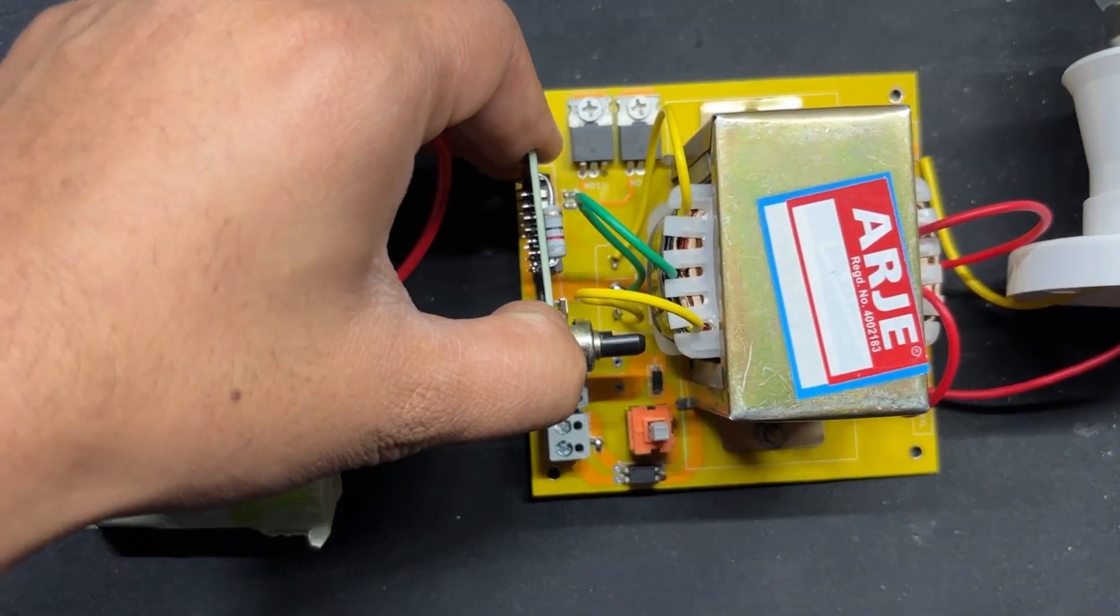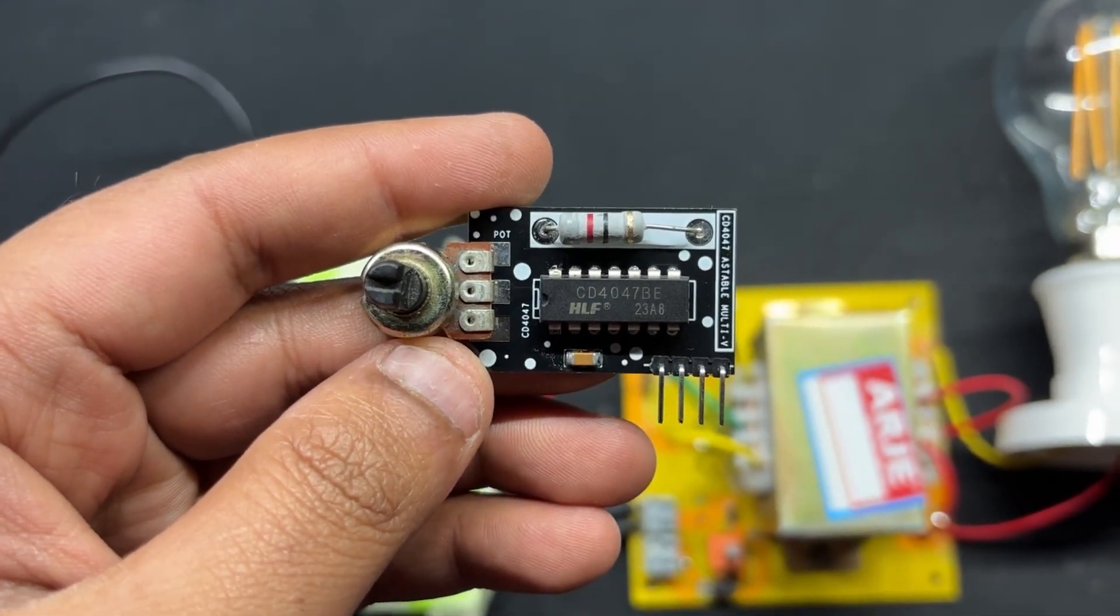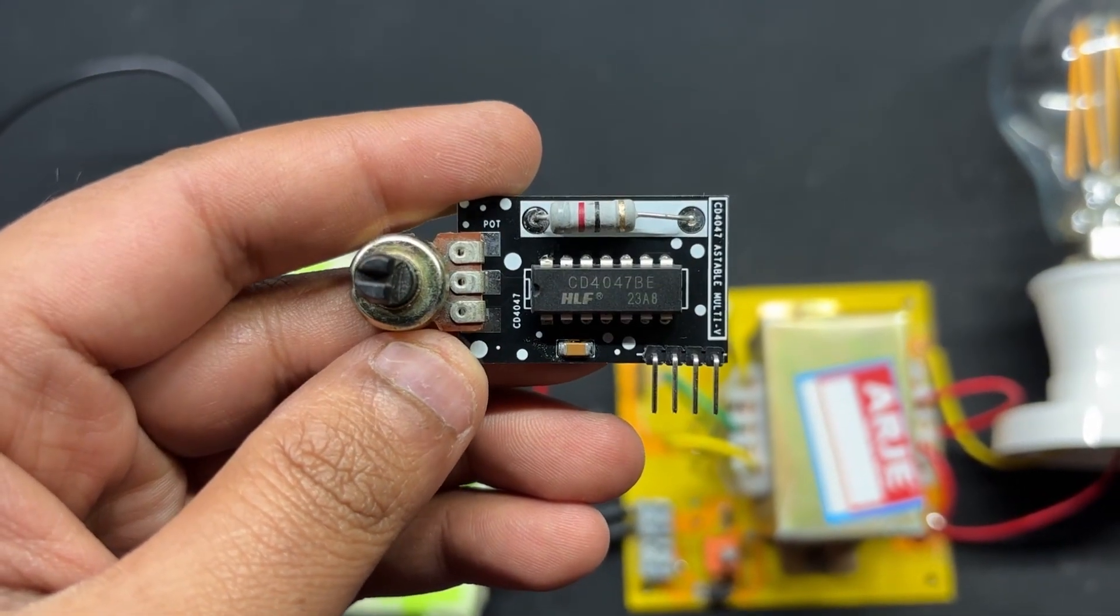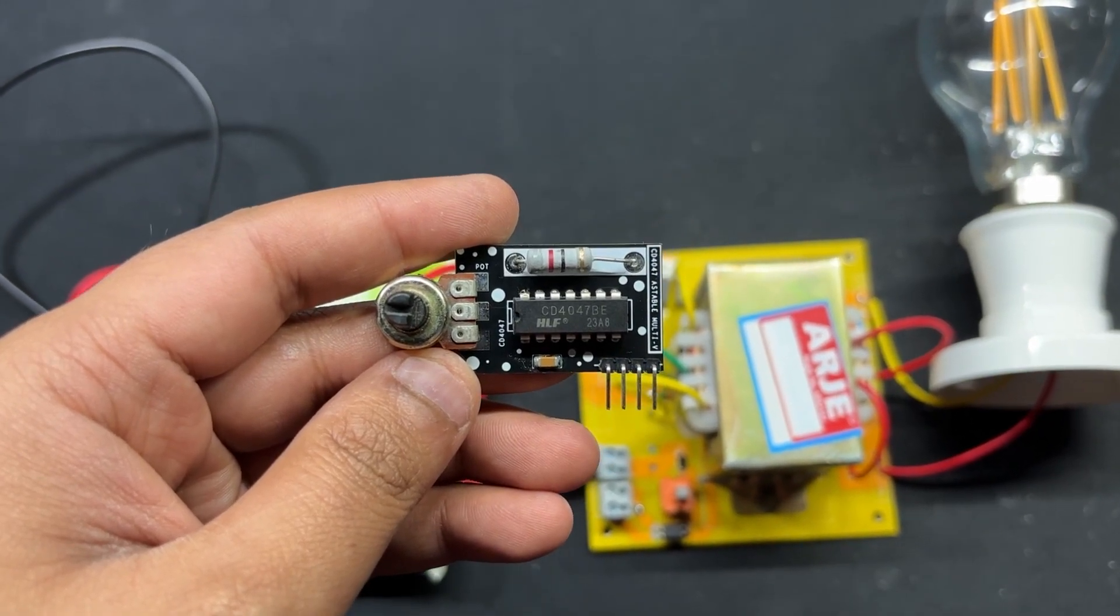This unique inverter design utilizes the CD4047 IC to generate precise square wave pulses with powerful MOSFETs and a 12V to 120V transformer to achieve an adequate AC output.